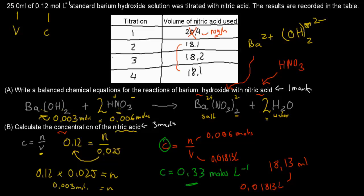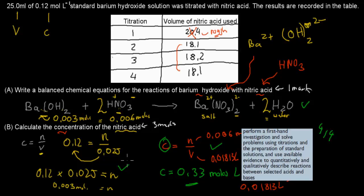You get a mark for the answer, a mark for the correct sequencing to get there, and a mark for the balanced equation — that's 4 marks out of 4. This question came from the learning outcome: perform a first-hand investigation to solve problems using titrations and in preparation of a standard solution. The key skill here is solving problems using titrations. Hopefully that was useful — thank you for watching.